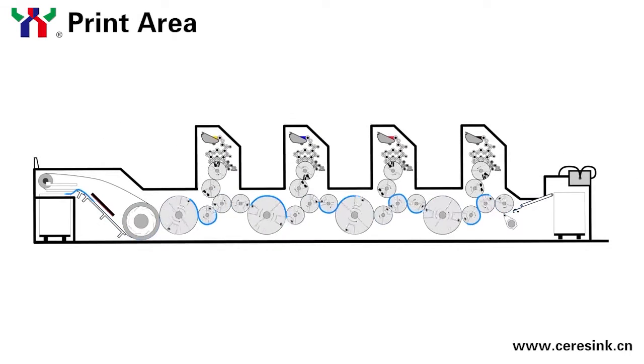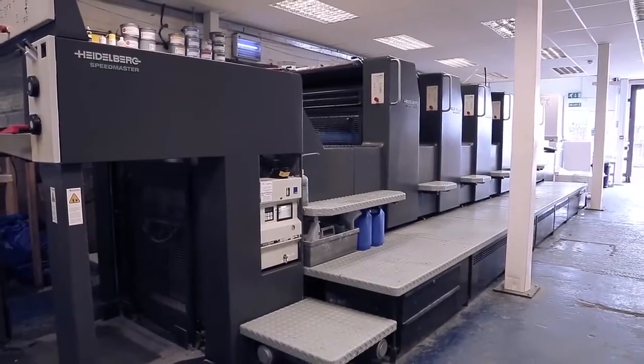Once the prints have passed through each unit, they will then be dried with hot and cool air and placed on the delivery pile. And that is the process of offset lithographic printing.